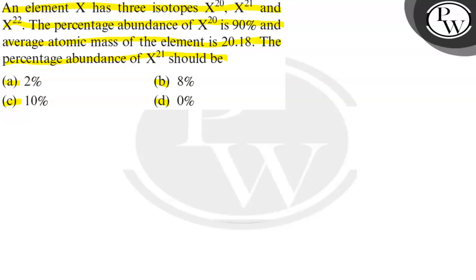Let us solve. Here, element X has three isotopes. We will find out the percentage abundance of X^21. Let us solve this.